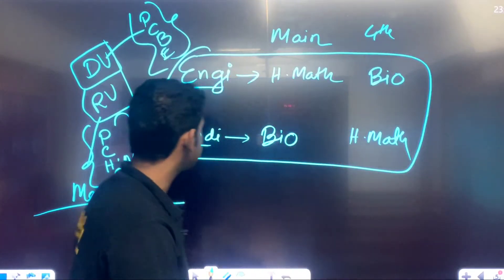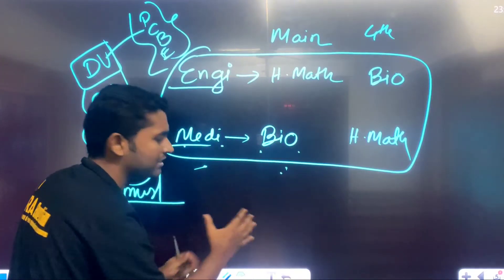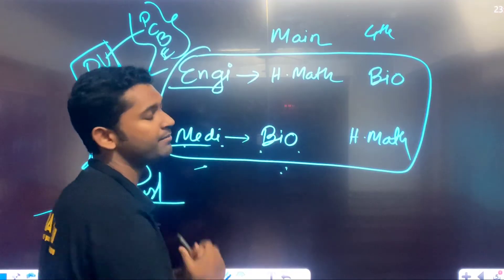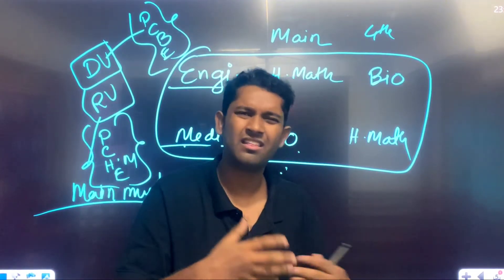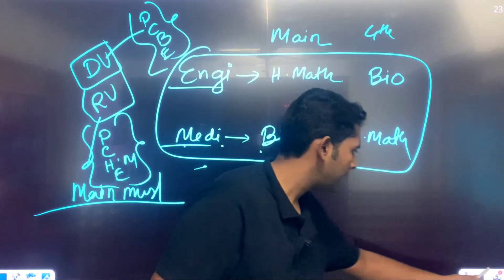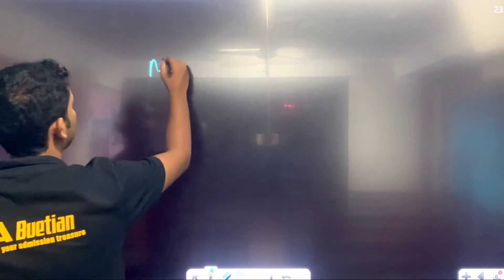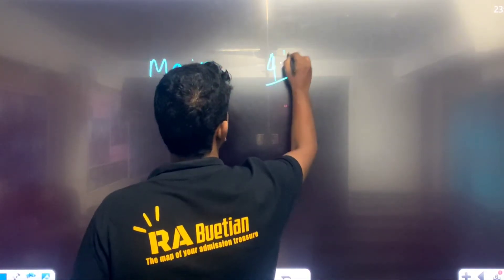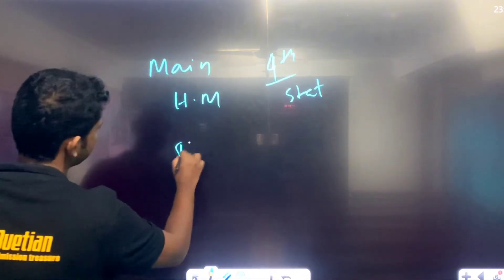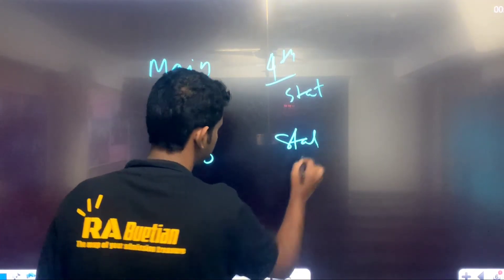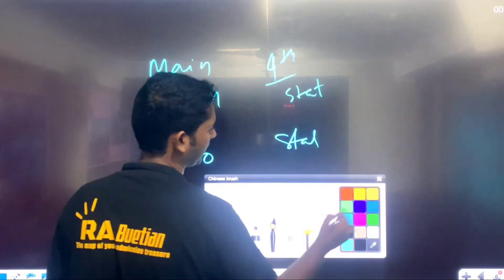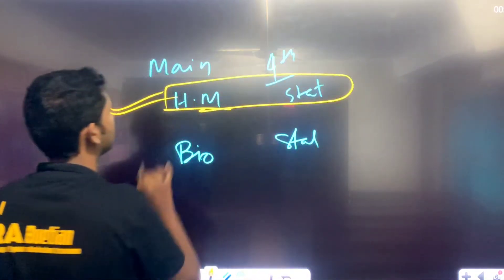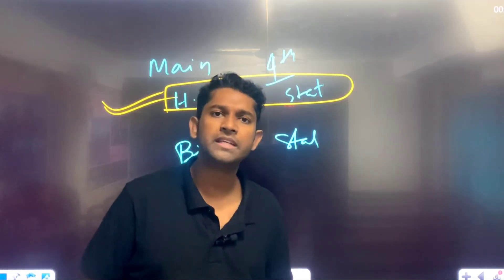So for medical aspirants, biology is the main subject and higher math is the fourth subject. For engineering aspirants, higher math is the main subject and biology is the fourth subject. We have to look at these combinations clearly — main subject higher math, fourth subject biology for engineering; main subject biology, fourth subject stats for others.